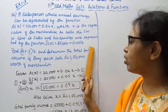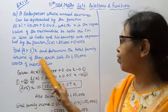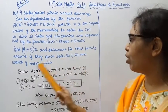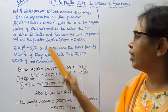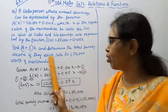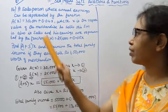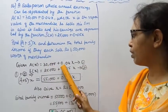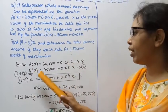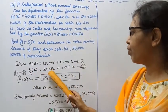determine the total family income if they each sell Rs. 1,50,000 worth of merchandise. Given A(x) = 30,000 + 0.04x and S(x) = 25,000 + 0.05x.